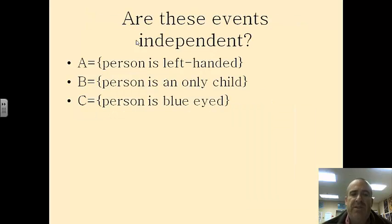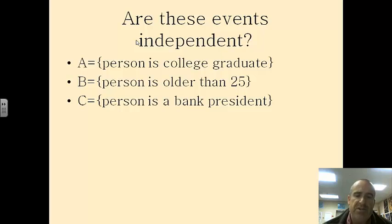So are these events independent? A person is left handed, a person is an only child, and the person is blue eyed. Yes, these events are independent. They have no relationship upon each other.